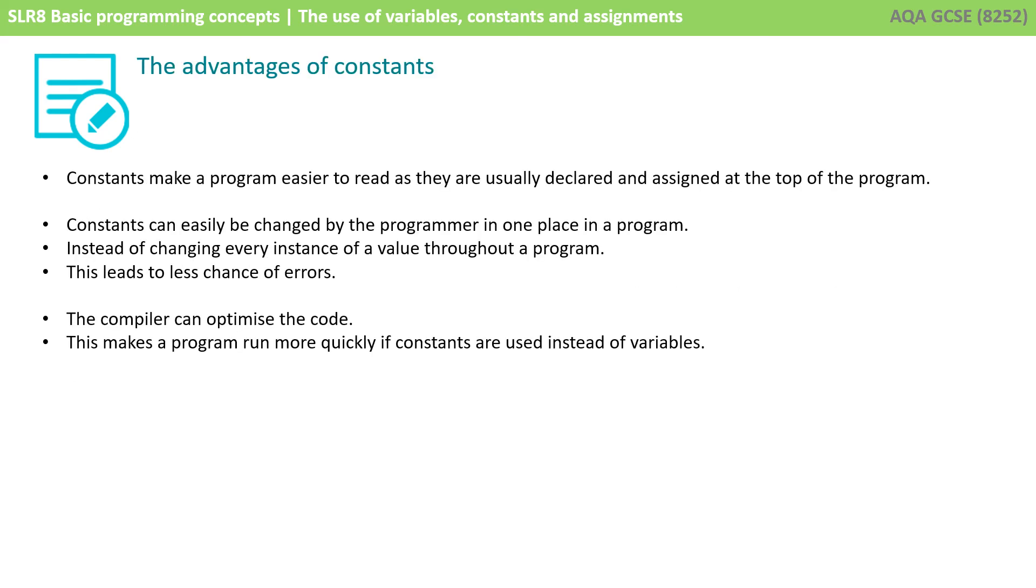You need to understand some of the advantages of using constants over variables, even if they aren't supported in the language that you've been learning, for example, Python. So constants make a program easier to read, as they're usually declared and assigned at the top of the program. Constants can easily be changed by the programmer in one single place, that's where they're declared, instead of changing every instance of a particular value throughout a program, and this leads to less chance of errors. When you use constants, the compiler can optimise the code, and this makes the program run more quickly if constants are used instead of variables.